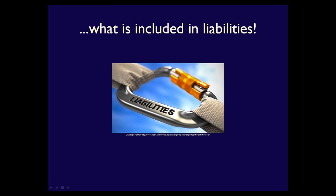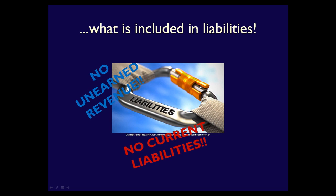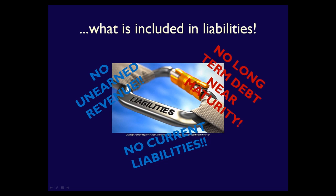The second consideration would be what liabilities are included in total liabilities. This may differ considerably between different businesses. Some use only debt that requires a cash outflow, meaning they omit unearned revenue. Some include only long-term debt, which means they exclude all short-term liabilities. Even that can be complicated since, if long-term debt is close to maturity, the business may exclude it since it can be categorized as short-term. All of these factors complicate the comparison of the debt-to-equity ratio.